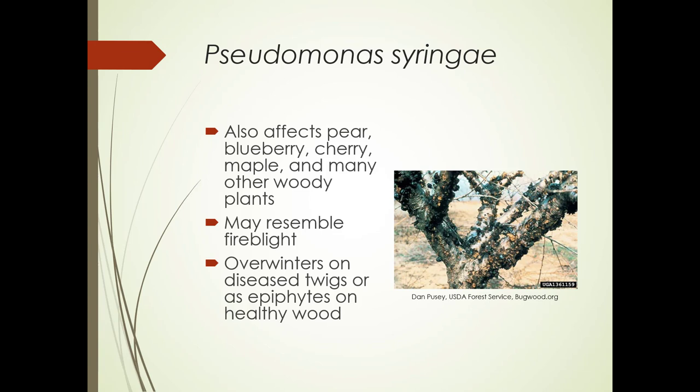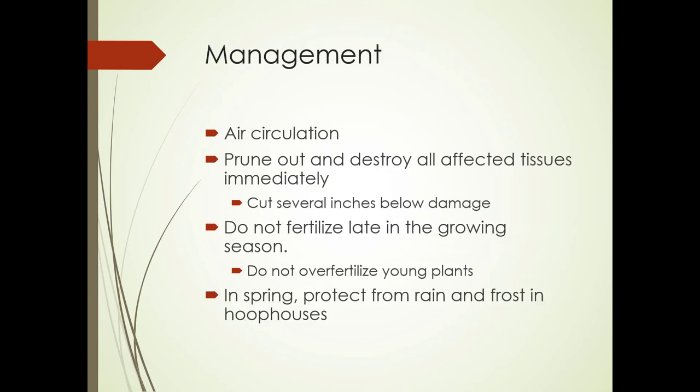Pseudomonas syringae also affects pear, blueberries, cherries, maples, and many other woody plants. It may resemble fire blight, but is probably more common on this side of the mountains. It overwinters on diseased twigs or stems as epiphytes on healthy wood. Management includes improving air circulation, pruning out and destroying all affected tissues immediately — going at least six inches below the damage. Do not fertilize late in the growing season or over-fertilize young plants, as they become more susceptible. In spring, protect from rain and frost in hoop houses.